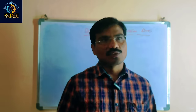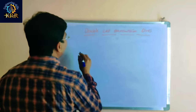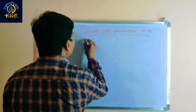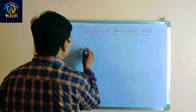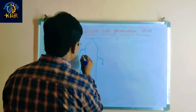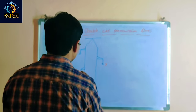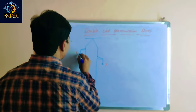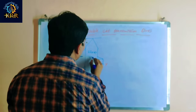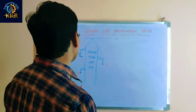What are the disadvantages in a single circuit transmission line? This is the single circuit transmission line. Suppose this is the R phase, Y phase, and B phase. The radius is 2 cm. This is the 220 kV operating voltage single circuit line.